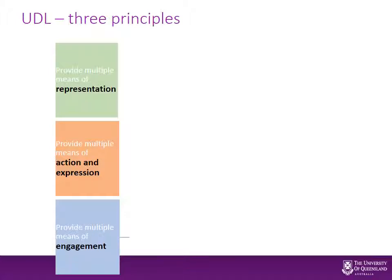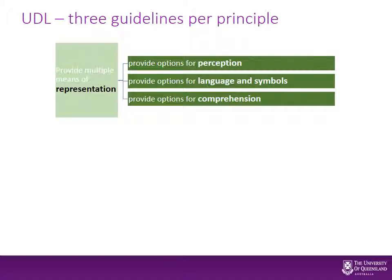Moving on to UDL — there is a hyperlink on the previous slide that you can click to an organisation that's developed this universal design for learning where you can get an overview. There are three main principles: multiple means of representation, multiple means of action and expression, and multiple means of engagement. For representation, we provide options for perception — how you get information. We learn a lot in our culture around language and symbols, and that's a very important human way of learning, so focusing on multiple means of use of language and symbols is really important. Then multiple means of options for comprehension — how do we make sure that a student is able to comprehend the material that's being represented.